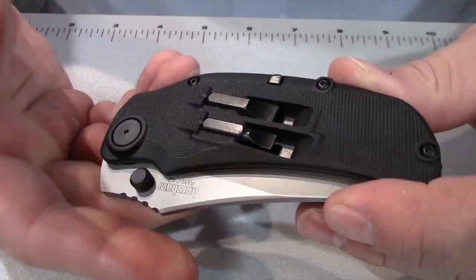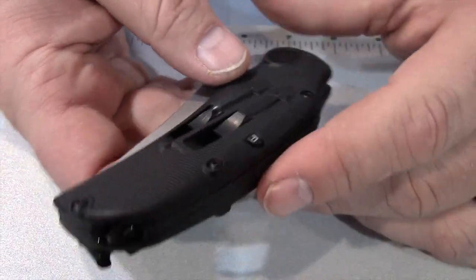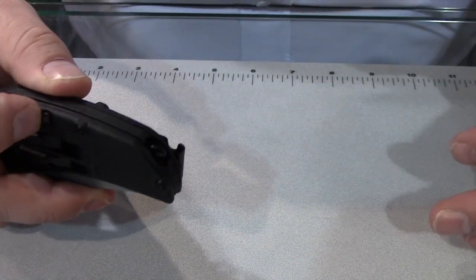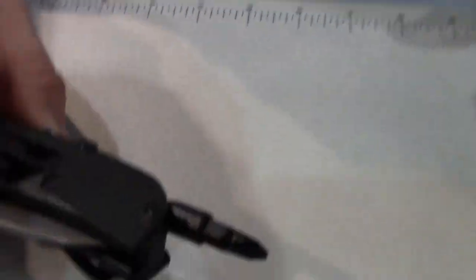The cool feature with this is that there's actually a release button here. It's a cross lock, spring loaded, so when you're ready to use it you just push the button and you can get your drive out.